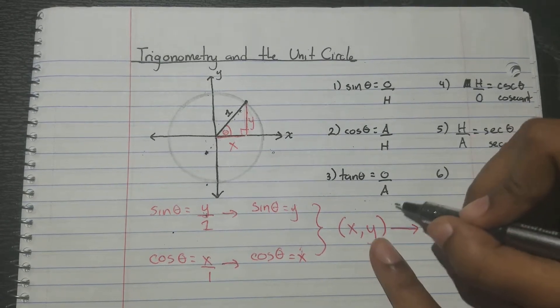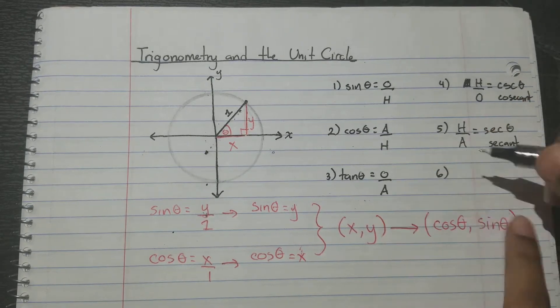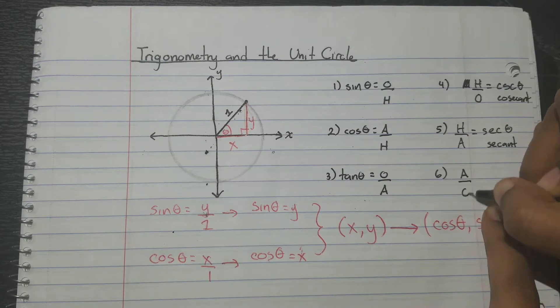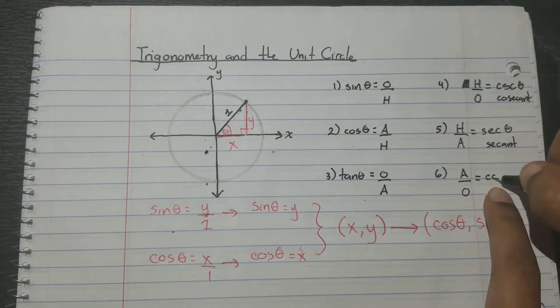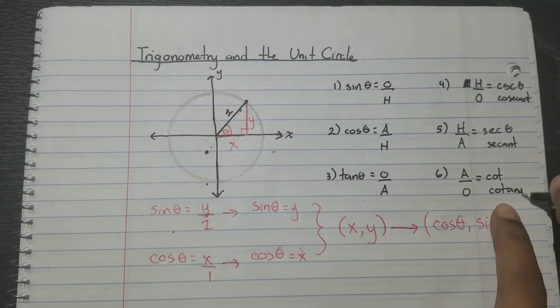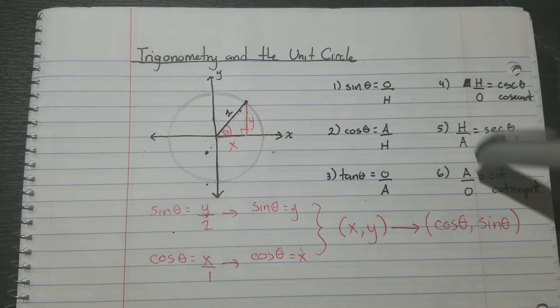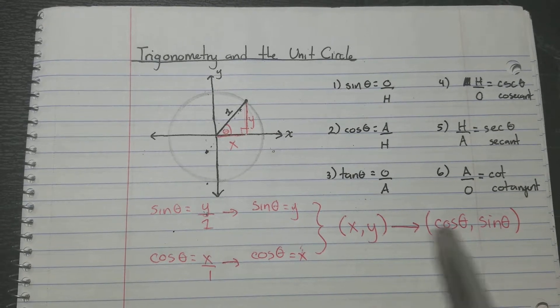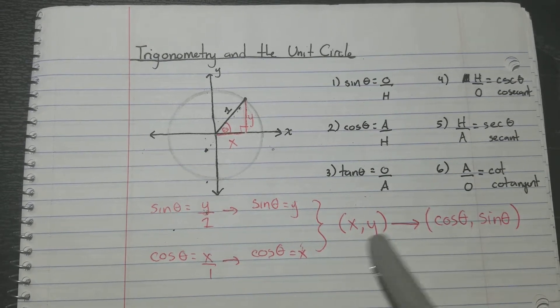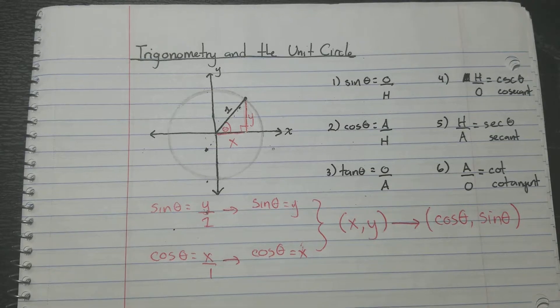And what about this one? If it's opposite over adjacent for tan, it'll be adjacent over opposite for cotangent. So cotangent. So now you have all six trig functions, and you have the basic conversion between the x, y and the cosine, sine theta.